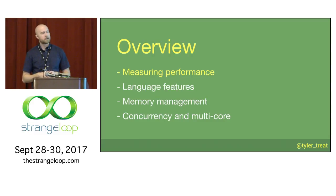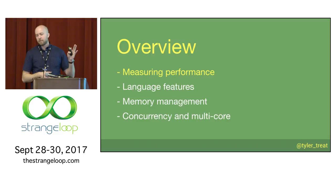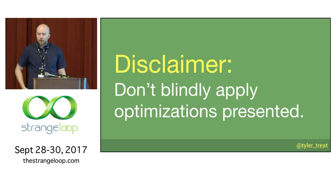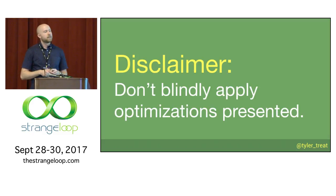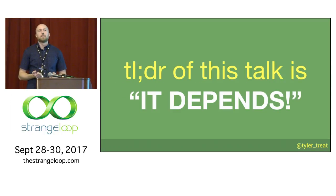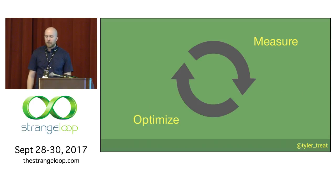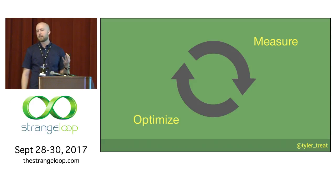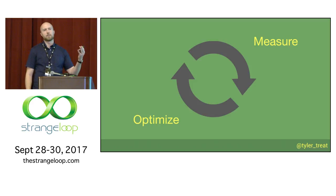We're going to touch briefly on measuring performance in Go, then dive into language features, talk about memory management, and wrap up with concurrency and some multi-core techniques. I can't emphasize this enough — don't just blindly apply the optimizations we're going to talk about. As with anything, it depends, and there are tradeoffs involved. I tend to think of optimization as a two-step process: you measure, then you optimize, and you repeat that as needed until you've met your acceptance criteria.